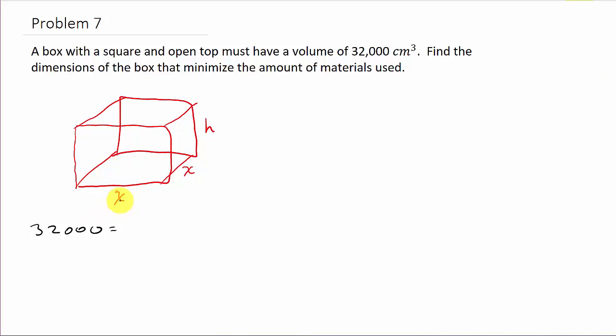X times X is X squared times the height H. That's information they gave us. Now what do they want us to minimize? They want us to minimize the materials used, so they want us to minimize the surface area. Let's get a function for the surface area.